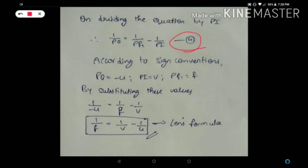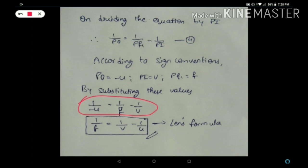According to sign conventions, for a convex lens the object distance is negative, image distance is positive, and focal length is positive. By substituting these values, 1/(minus u) = 1/f minus 1/v. Simplifying, we get 1/f = 1/v minus 1/u, where focal length equals 1 over image distance minus 1 over object distance.